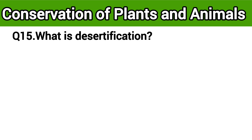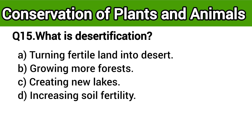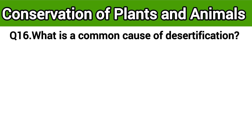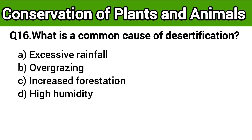Question number 15: What is desertification? The right answer is option A: turning fertile land into desert. Question number 16: What is the common cause of desertification? The right answer is option B: overgrazing.